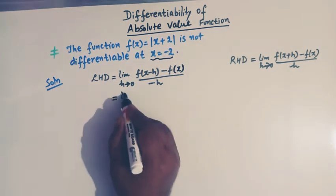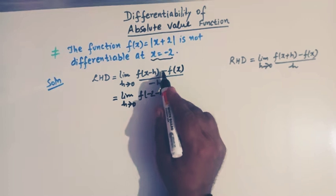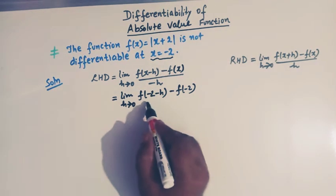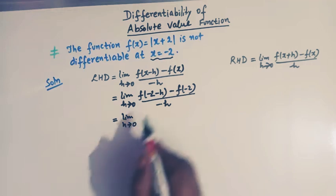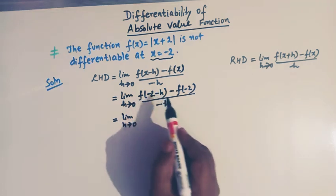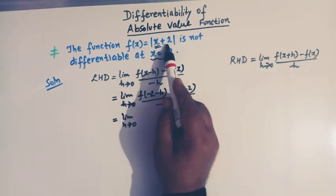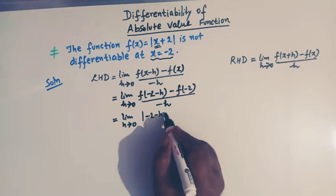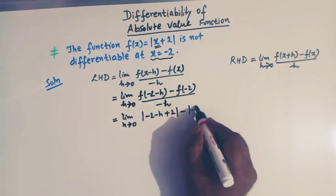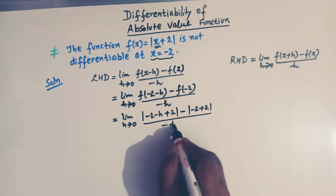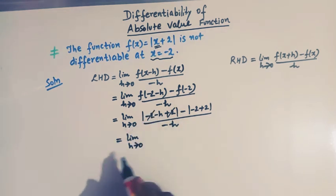The left-hand derivative becomes: limit h→0 of [f(-2 - h) - f(-2)] / (-h). Now f(-2 - h) is obtained by substituting x = -2 - h in the function, so we have |-2 - h + 2|, and for f(-2) we have |-2 + 2|, all divided by -h.